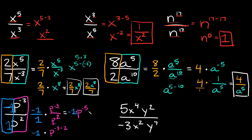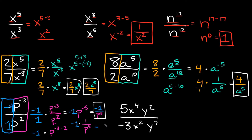Now p to the negative 5 — we can write that as a fraction by putting it under 1. So this would be 1 over p to the positive 5. And we're still multiplying by this negative 1 out here. So negative 1 times 1 over p to the 5th would be equal to negative 1 over p to the 5th — that would be your final answer. Or another way you could write that is negative 1 over p to the 5th. This and this are the exact same thing, just two slightly different ways of writing it.